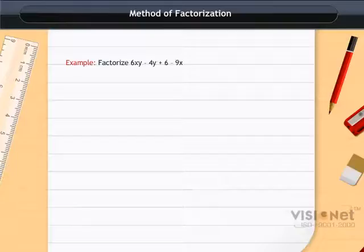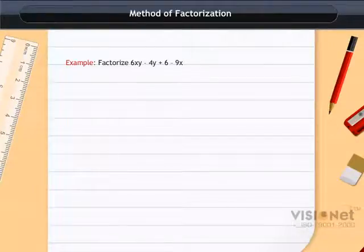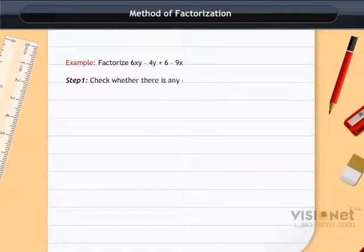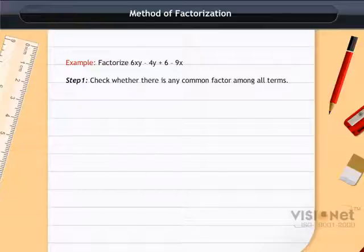Factorize 6xy - 4y + 6 - 9x. First of all, we will check whether there is any common factor among all the terms of the expression. In this case, there is no common factor. In second step, we do the grouping.